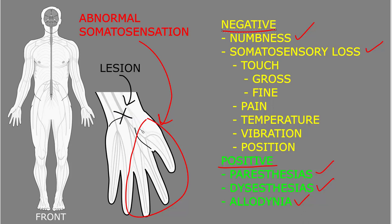When examining somatosensory loss, we can roughly quantify it by applying the same stimulus to normal and abnormal areas of the skin, then asking the patient to estimate a percentage of how much they feel the stimulus compared to 100% on normal skin. For instance, if an area of the hand is affected, I might touch that area and ask them to give a percentage compared to the other unaffected hand.